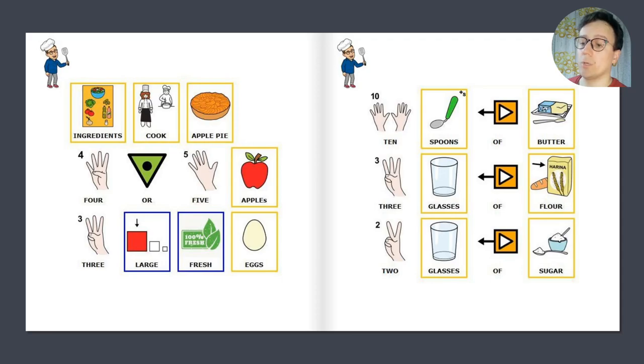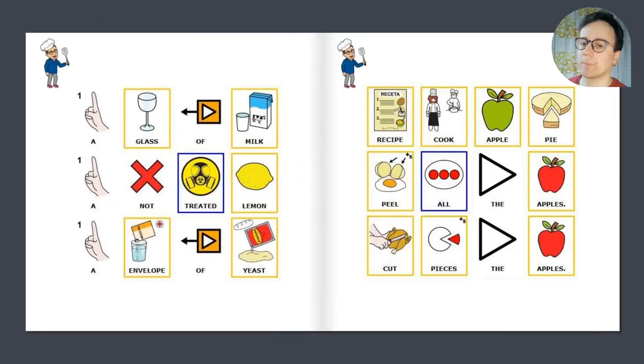2 glasses of sugar. A glass of milk, a nutmeg-treated lemon, an envelope of yeast.